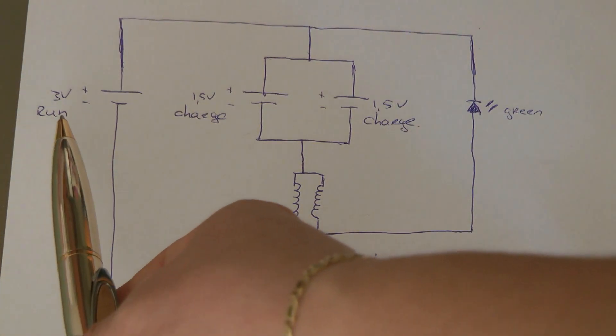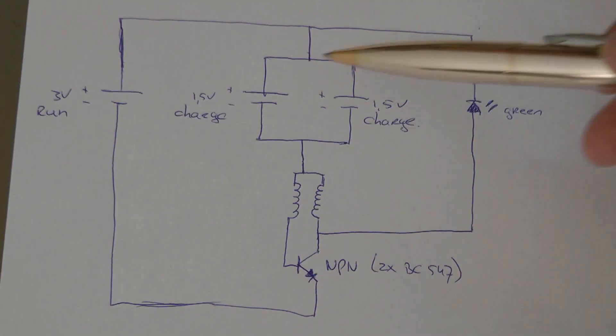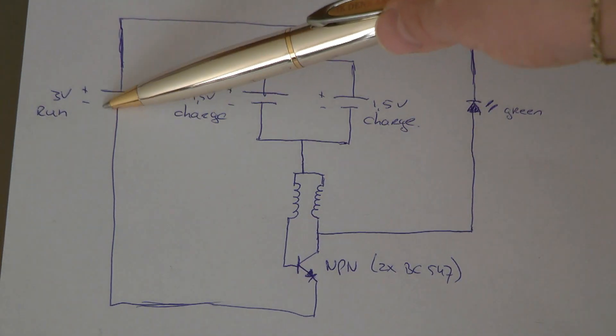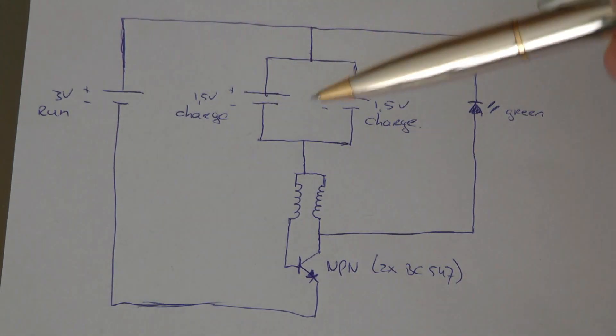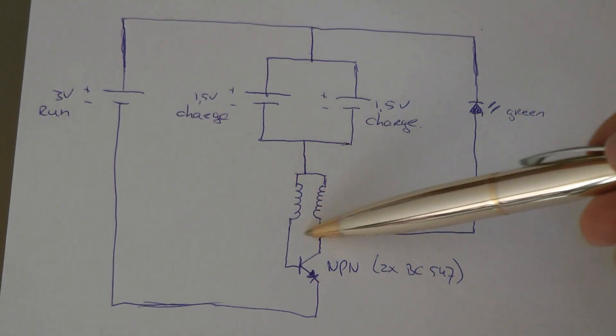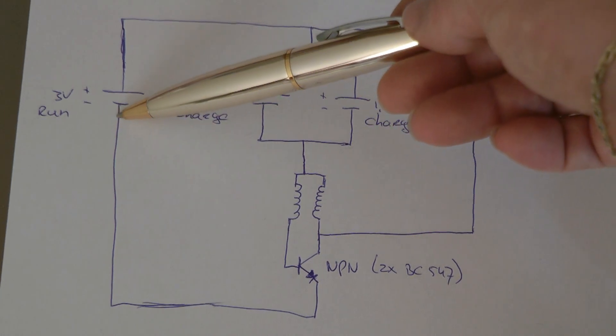On this side I have a 3V input consisting of two 1.5V batteries in series. Here we have the charging batteries - two 1.5V batteries in parallel. This circuit runs or charges with rechargeable batteries as well as non-rechargeable batteries, which works even better. From the run through the charge batteries, it charges conventionally this way. From the negative side of the two parallel charge batteries we go to the Joule Thief circuit, into a bifilar wound toroid, then to an NPN transistor, and back to the negative of the input.